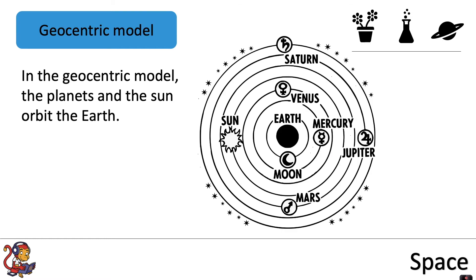There was an older model called the geocentric model and in the geocentric model the planets and the Sun orbit the Earth. The reason why people used to think that this was the correct model was because whilst they were standing on Earth they would see the Sun moving across the sky and they would see all of these other planets and the Moon too.